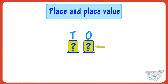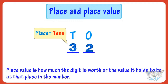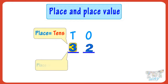For example, here we have a number. The place of three in this number is the tens place. Place value is how much the digit is worth, or the value it holds to be at that place in the number. The place value of 3 in this number is 3 tens, or 30.